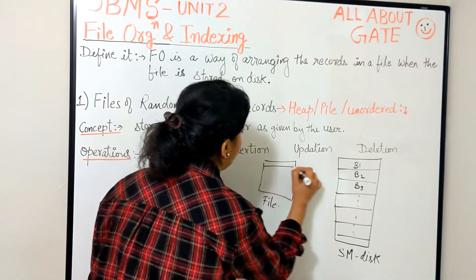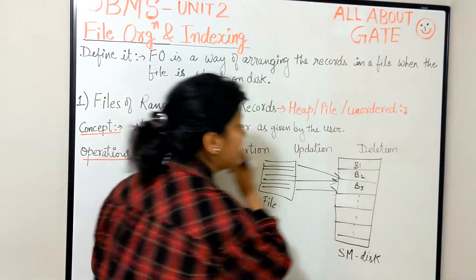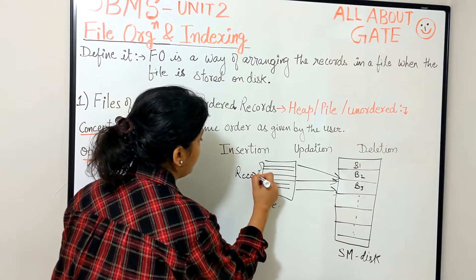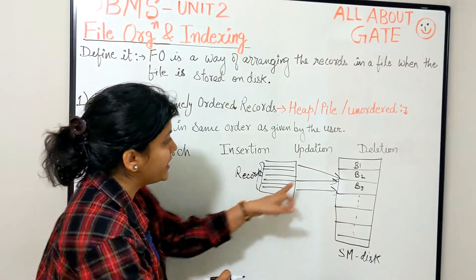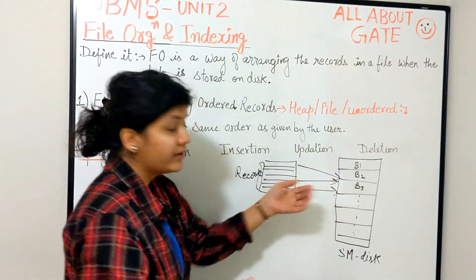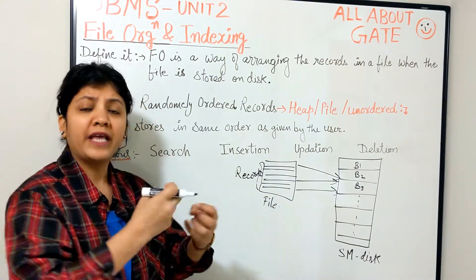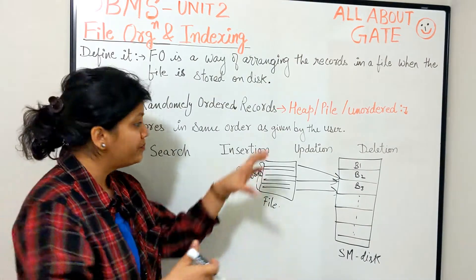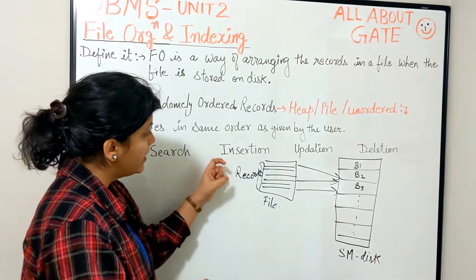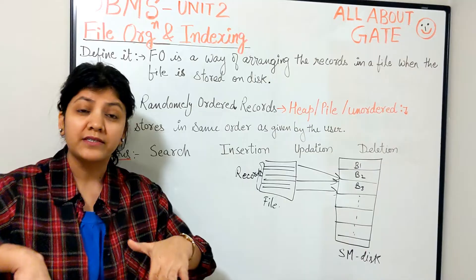Your file, which is actually a collection of records, is going to get stored on the disk in these blocks. So how these records are going to get stored on the disk — in what order are you putting all the records? Are you putting them as they are coming during insertion, or are you sorting them, or doing some hash operation on them? Based on that, the organization will be defined. That is where file organization comes into the picture, and how you arrange them on the disk will define how they can be accessed.